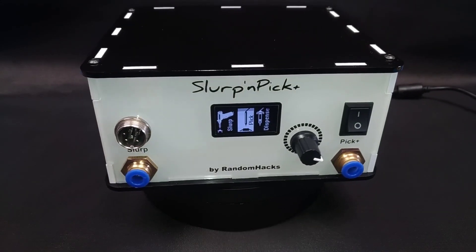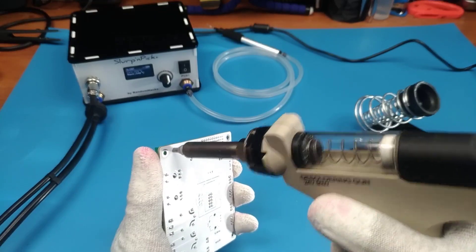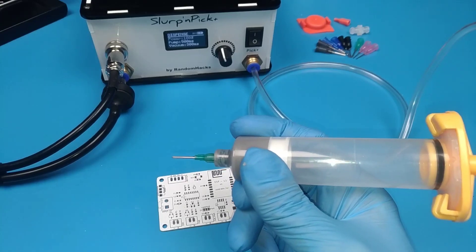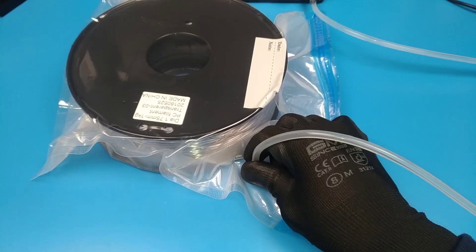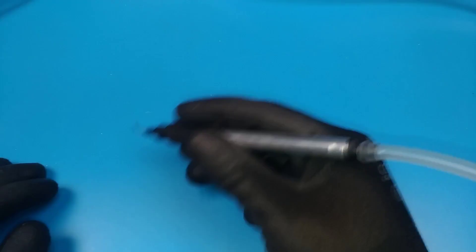Slurp & Pick Plus is a multifunctional station that can desolder THD components, dispense solder paste, pick SMDs and create vacuum or positive air pressure for all kinds of uses.